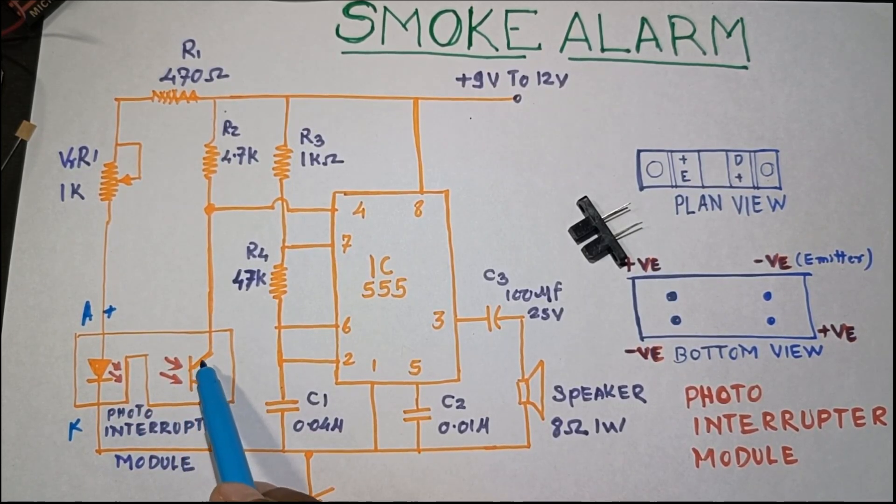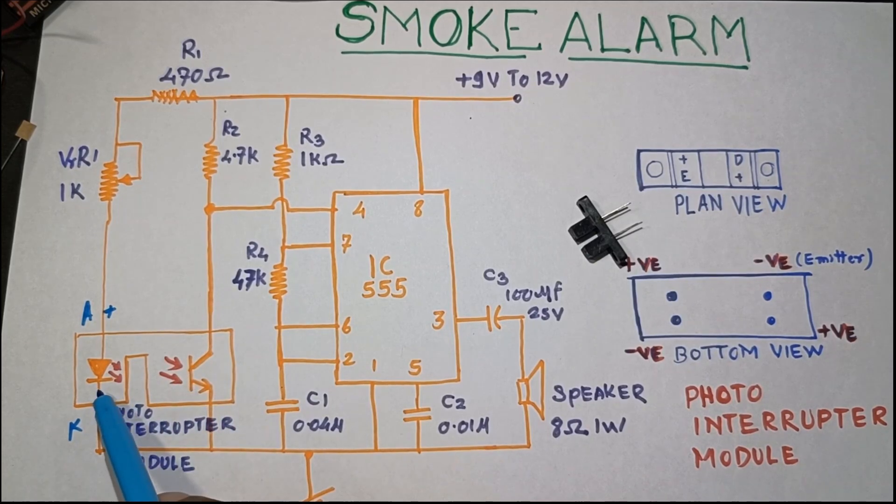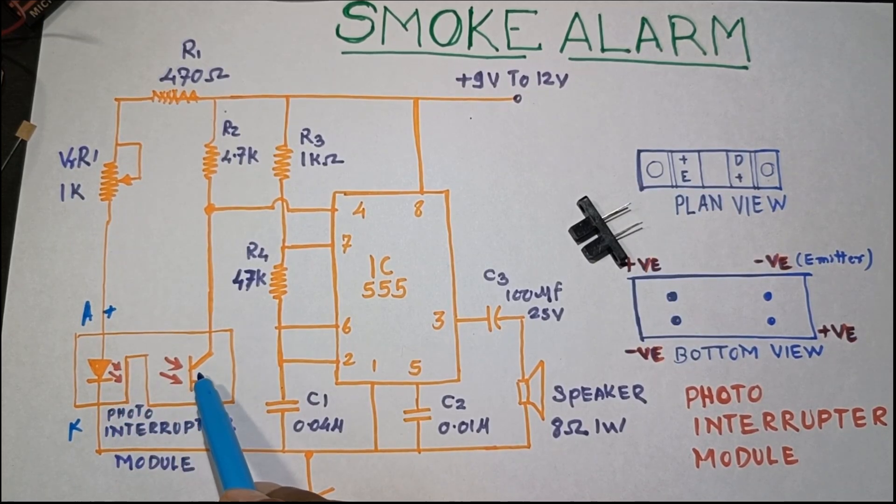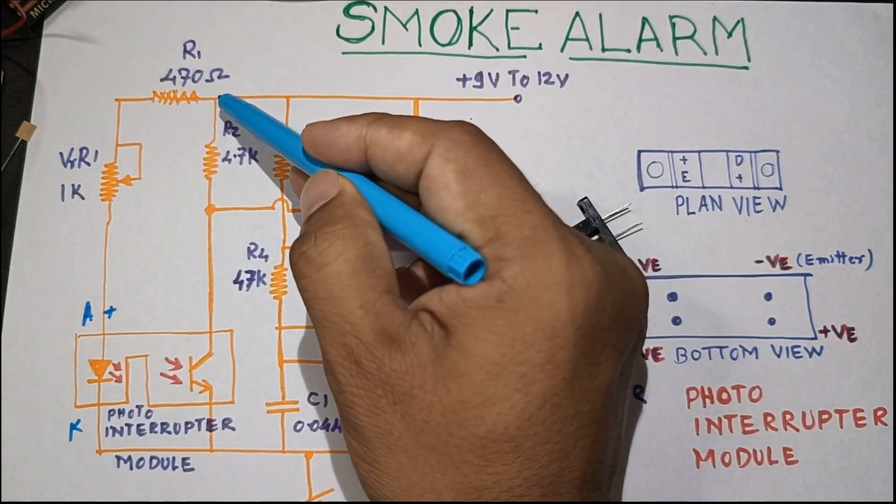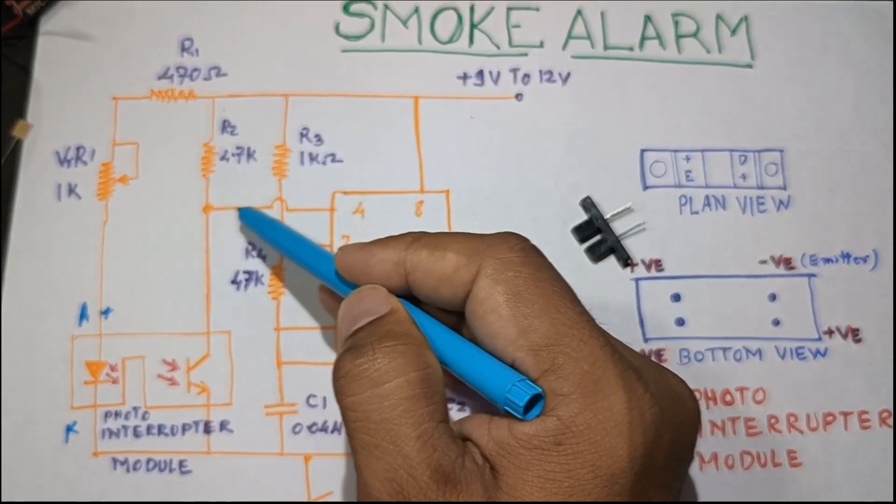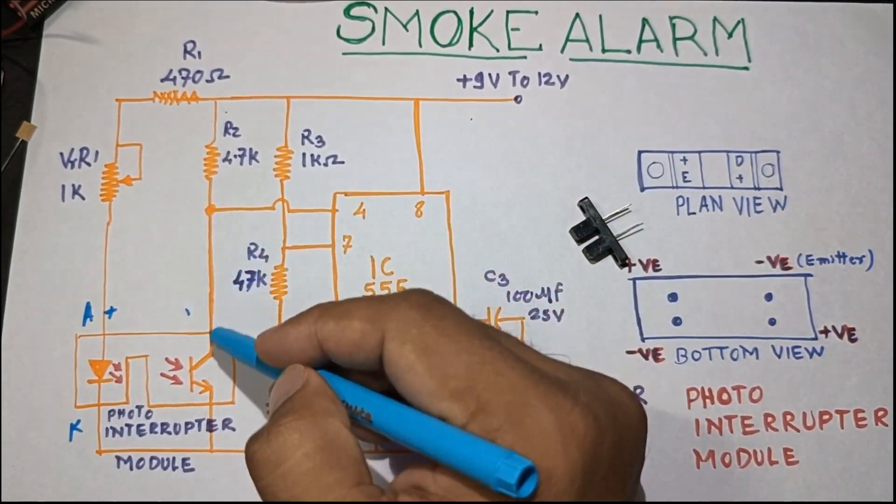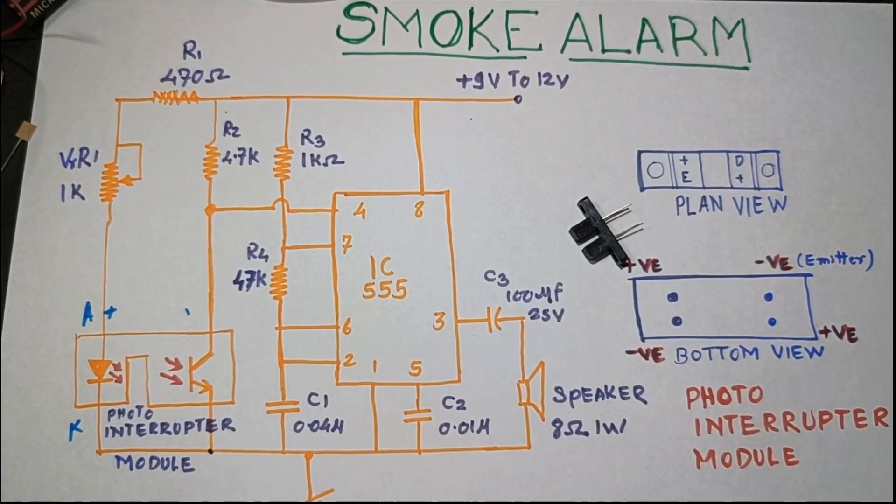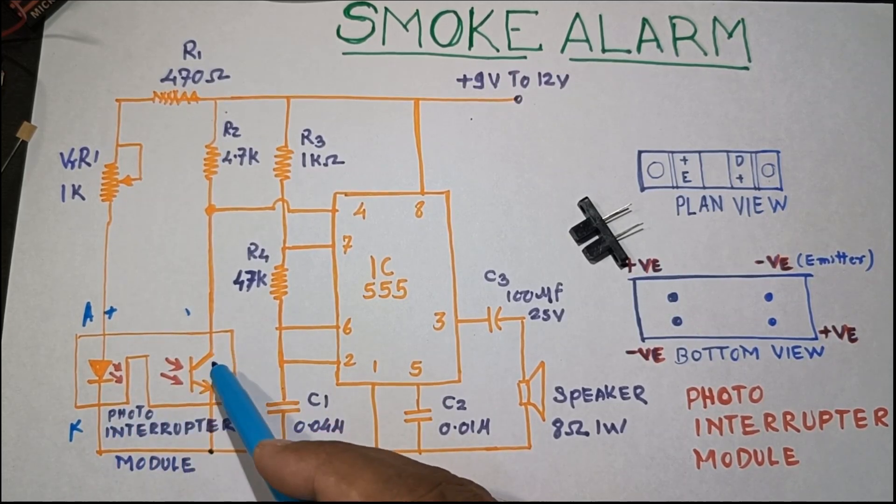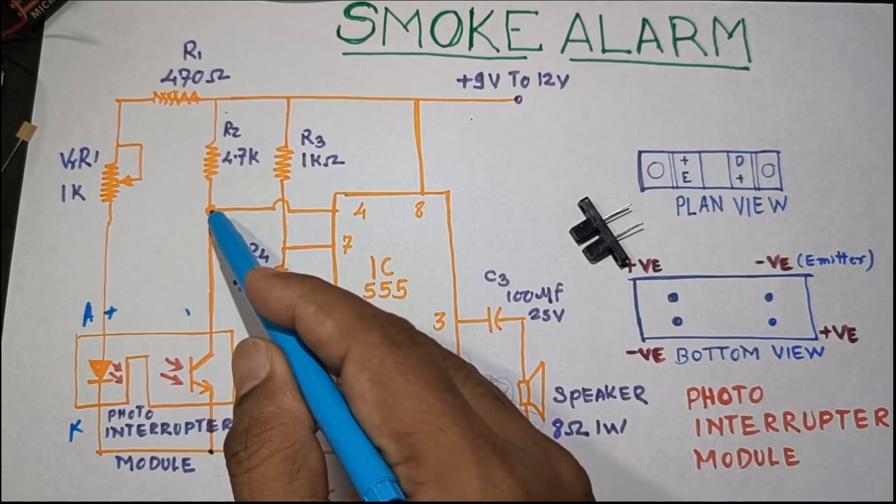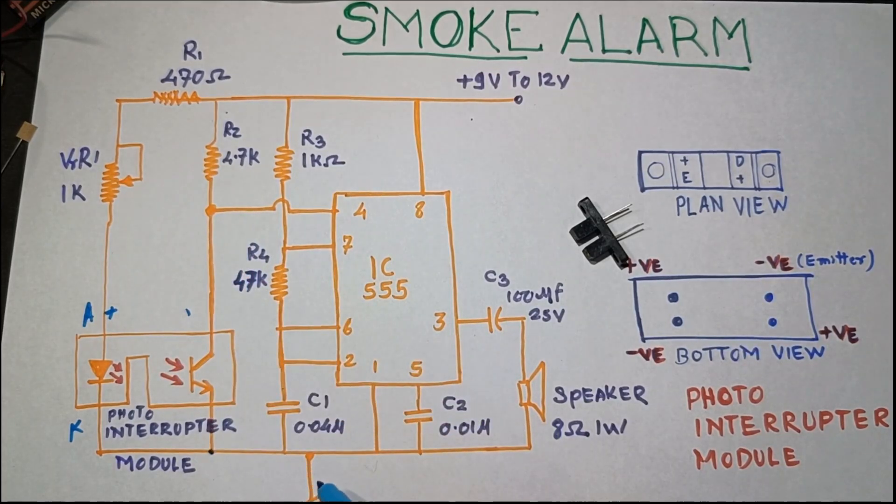This is a photo transistor, and when this light is falling on the photo transistor, the photo transistor turns on. Whatever voltage and current is flowing to pin number four flows towards the ground directly.